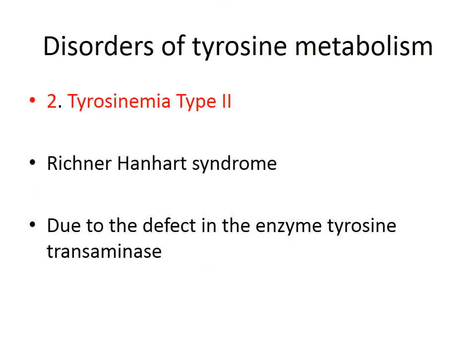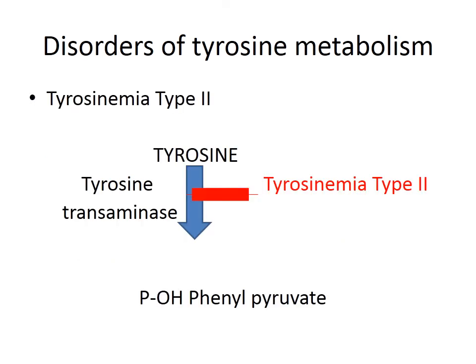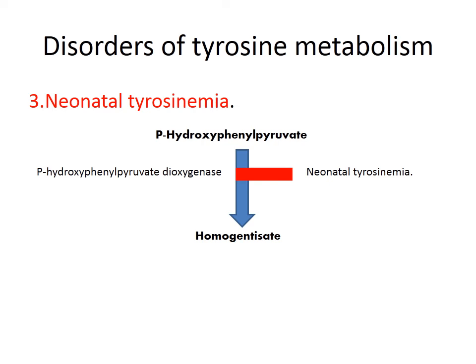The second disorder is tyrosinemia type 2, also called Richner-Hanhart syndrome, due to deficiency of the enzyme tyrosine transaminase in the skin. If this enzyme is deficient, tyrosine cannot be converted to parahydroxyphenylpyruvate, leading to tyrosinemia type 2. Third is neonatal tyrosinemia, which occurs at step 3: if the enzyme dioxygenase that converts parahydroxyphenylpyruvate to homogentisate is absent, it leads to neonatal tyrosinemia.